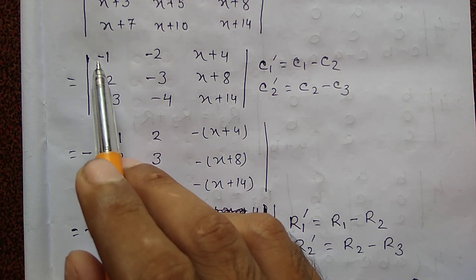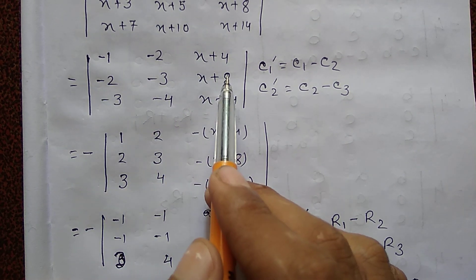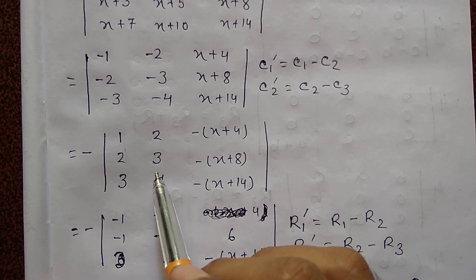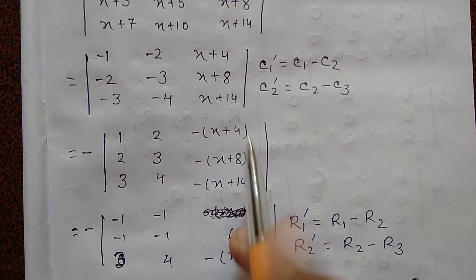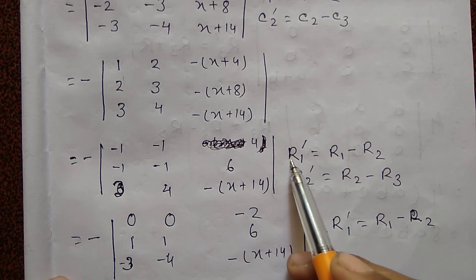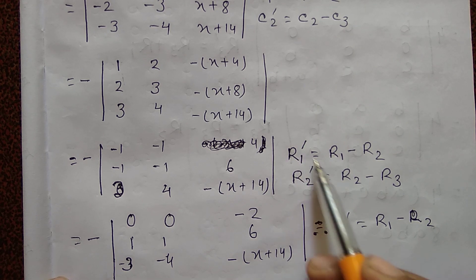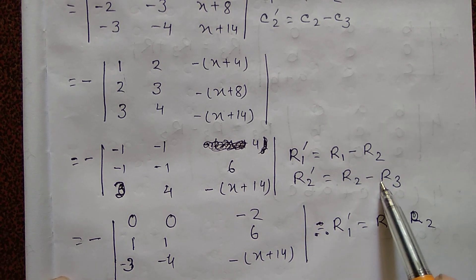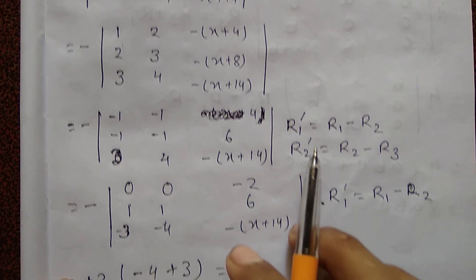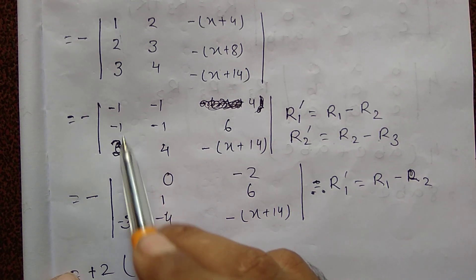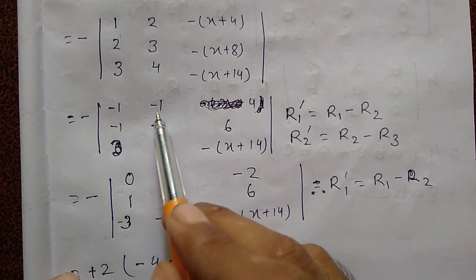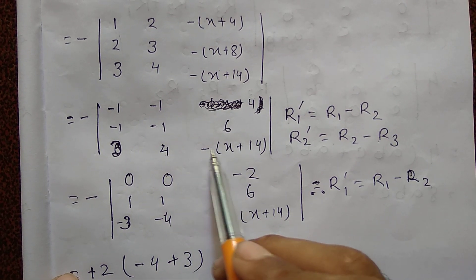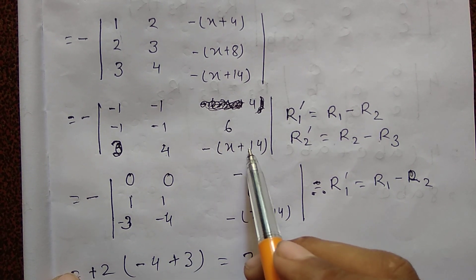For the numerical determinant: rows are listed with entries 1, 2, 3; 3, 9, 9; 9, 10, 12; 14. First row is minus, second row is minus, third row is minus. Third column is positive, third column is negative. Operation: R1 prime equal to R1 minus R2, R2 prime equal to R2 minus R3. This gives minus 1, minus 1, minus 3; minus 1, minus 1, minus 4; and 4, 6 minus x plus 40.